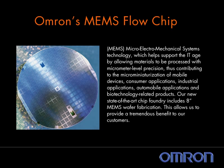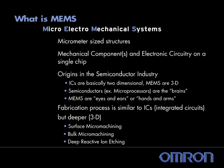OMRON's MEMS wafer foundries include both 5-inch and state-of-the-art 8-inch wafer fabrication capabilities. In basic terms, MEMS are devices that incorporate both electrical and mechanical components on a single silicon chip with micrometer-sized structures generally up to 100 micrometers.